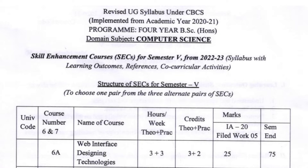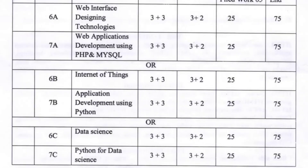In Section A, we have two papers: 6A and 7A. In Section B, we have two papers. In Section C, we have two papers: 6C and 7C.